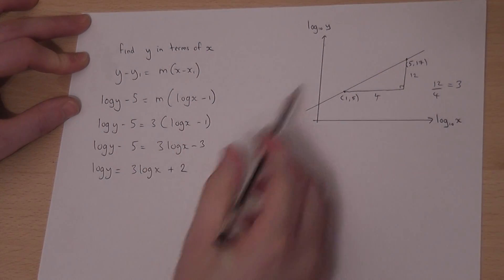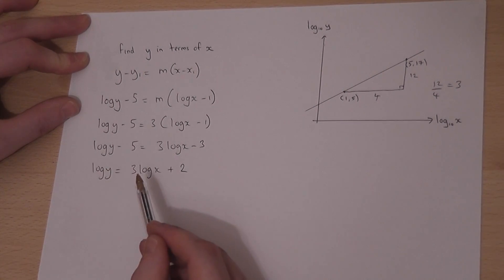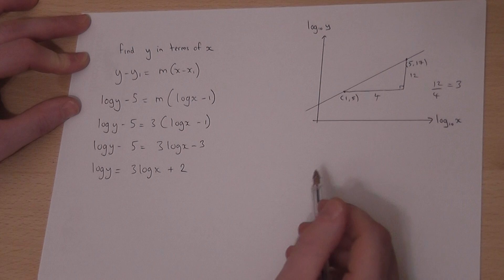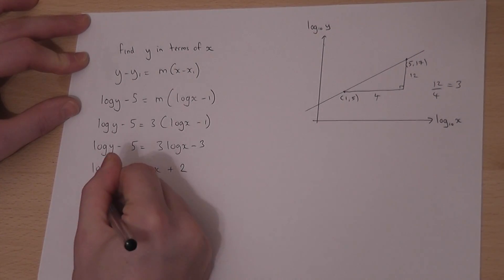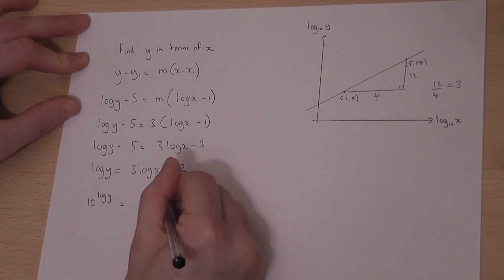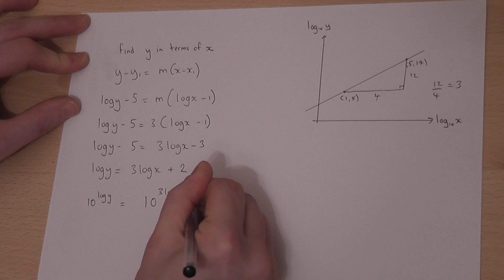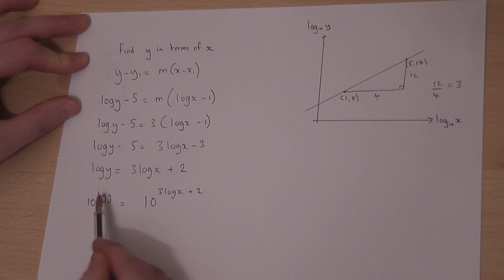Because these are log to the base 10, to cancel off the log, I have to raise both sides to the power of 10. So, 10 to the power of log y equals 10 to the power of 3 log x plus 2. The 10 and the log are inverse functions. So, that leaves me just with y.